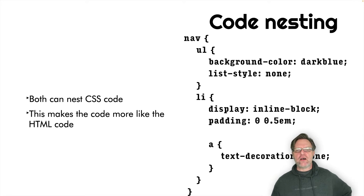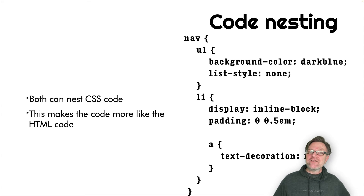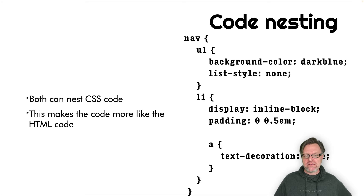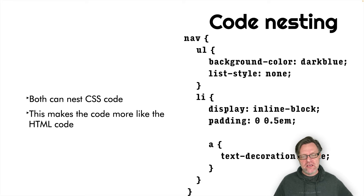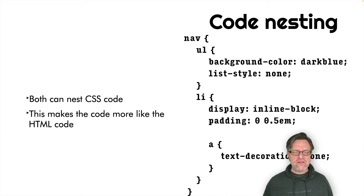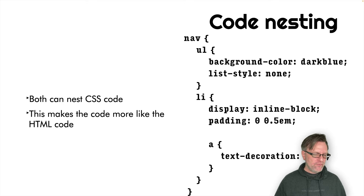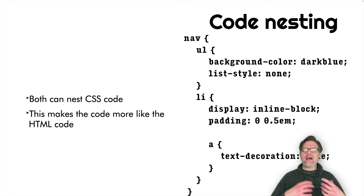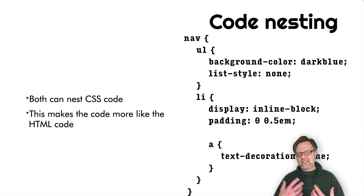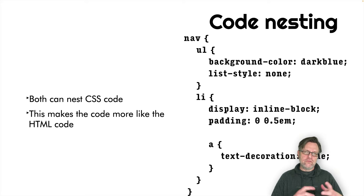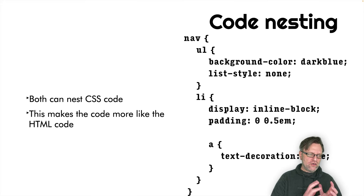For example, you can write like this: you can have a nav, and then within that nav you put a ul, and then within that you also put an li, and then maybe you put an anchor within the li. So then you have a SASS or LESS code that looks more similar to your HTML file.